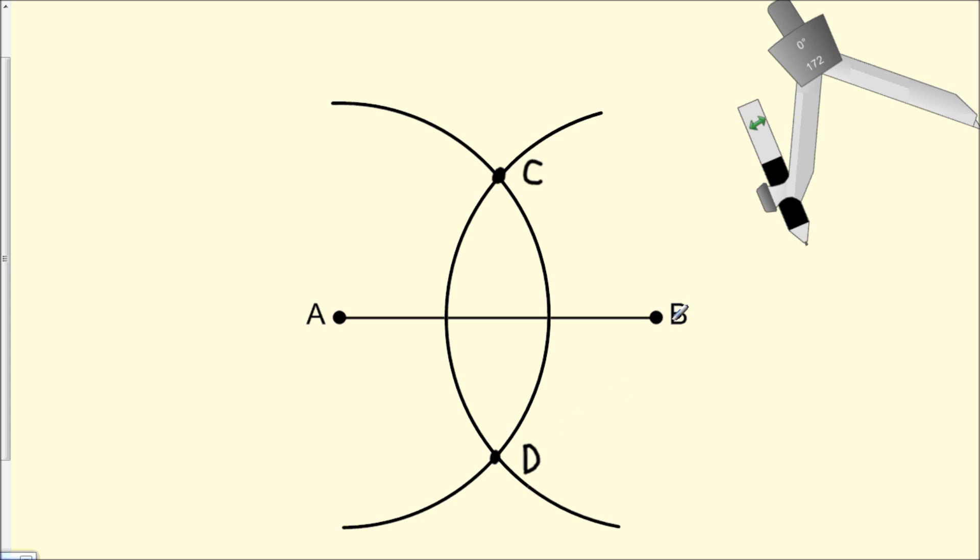Next, we need to construct a line that passes through both points C and D. Starting here, and if you're doing this at home, you're going to use a straightedge. We connect these two points of intersection.